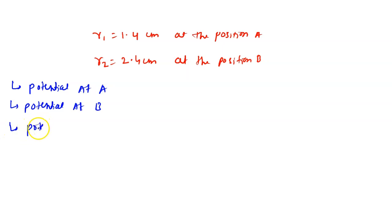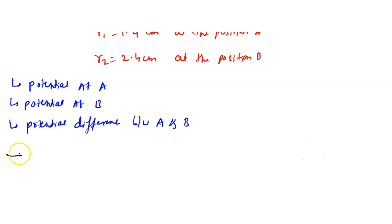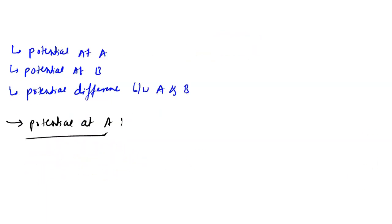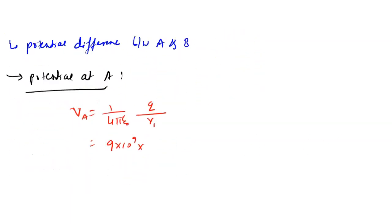They are asking to find: potential at A, potential at B, and potential difference between A and B. To find potential at A, we write VA equals 1/(4πε₀) × Q/R1. Here 1/(4πε₀) is 9 × 10⁹, Q is 1.8 × 10⁻⁹, divided by R1 which is 1.4 × 10⁻² meter.